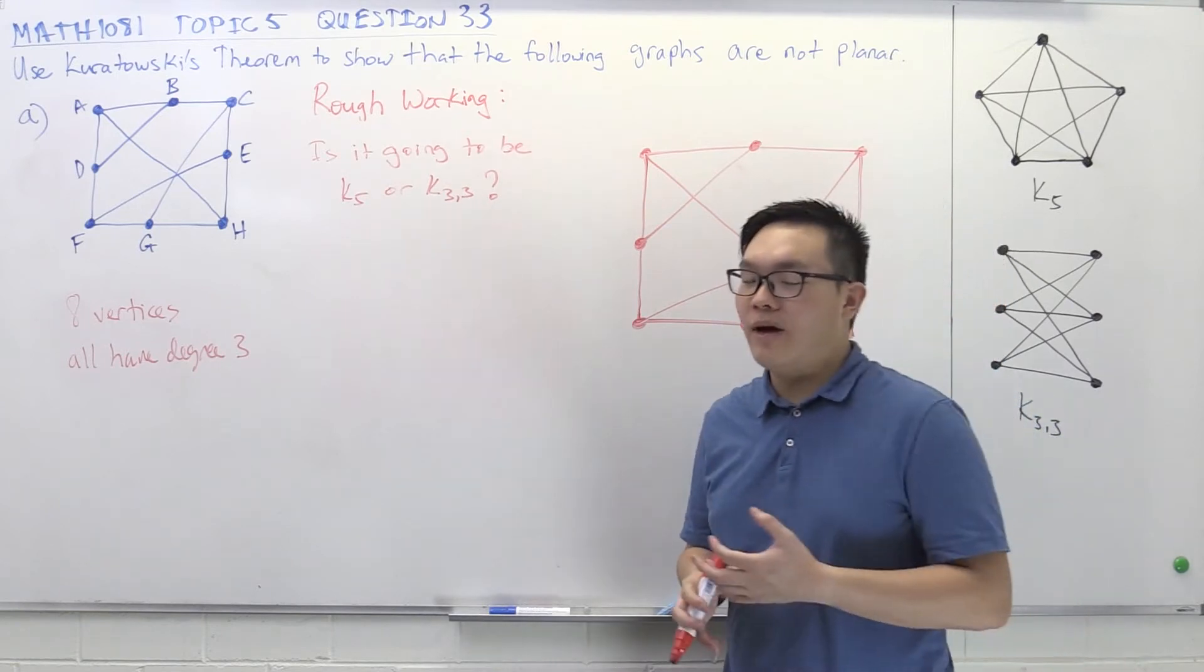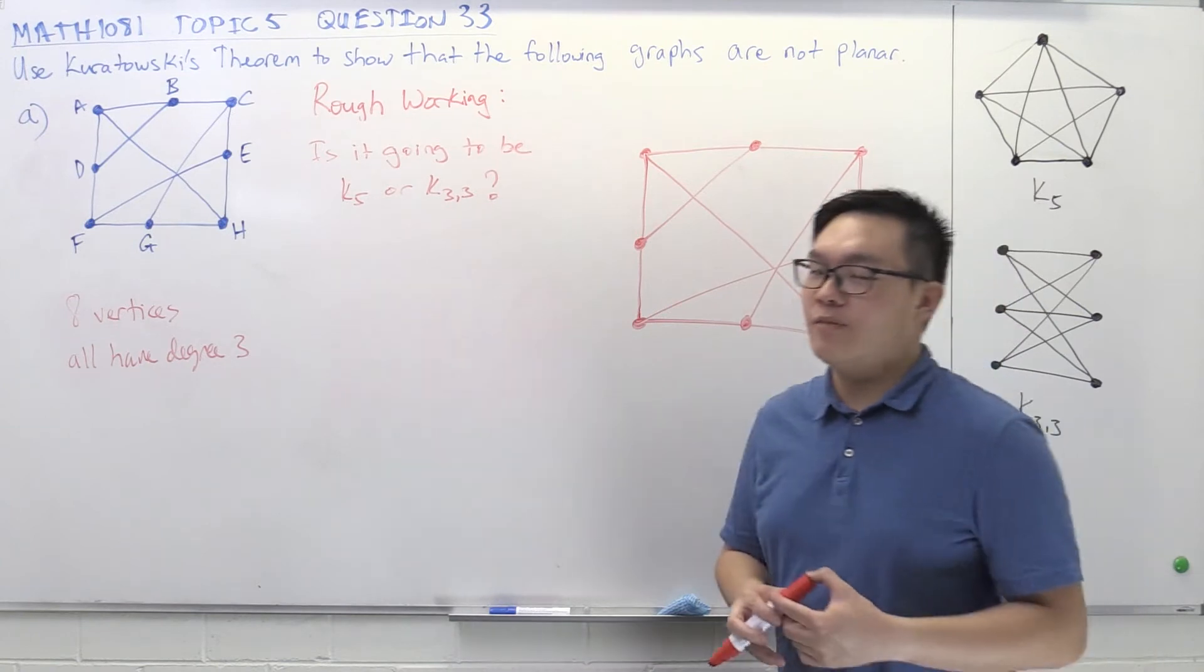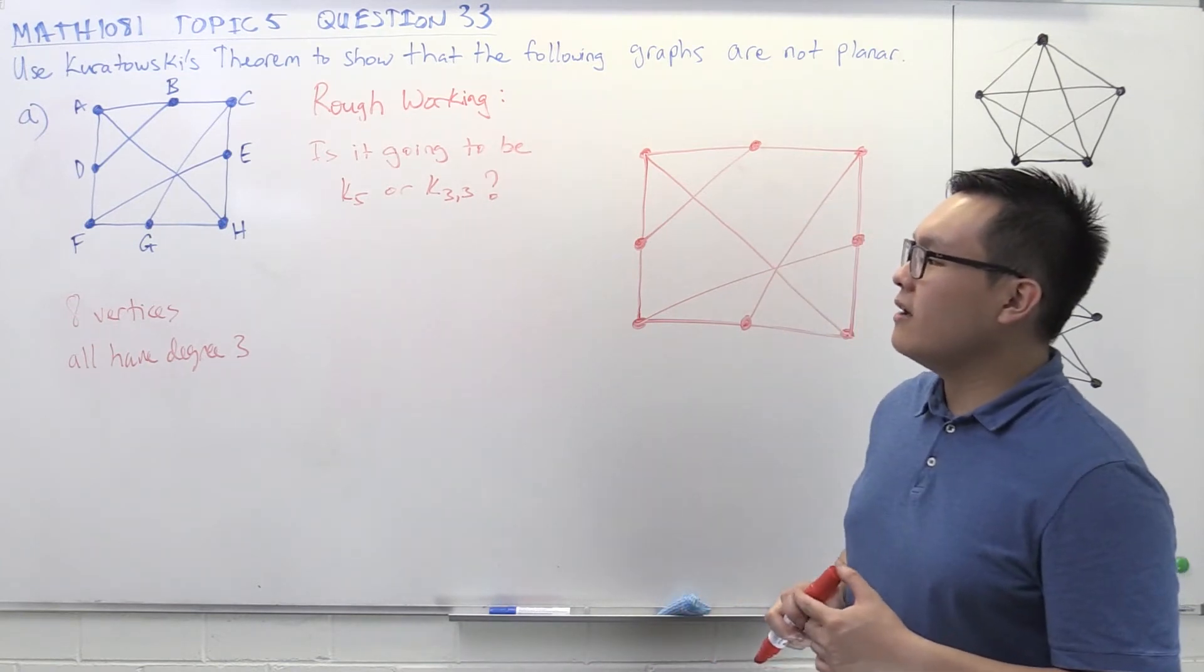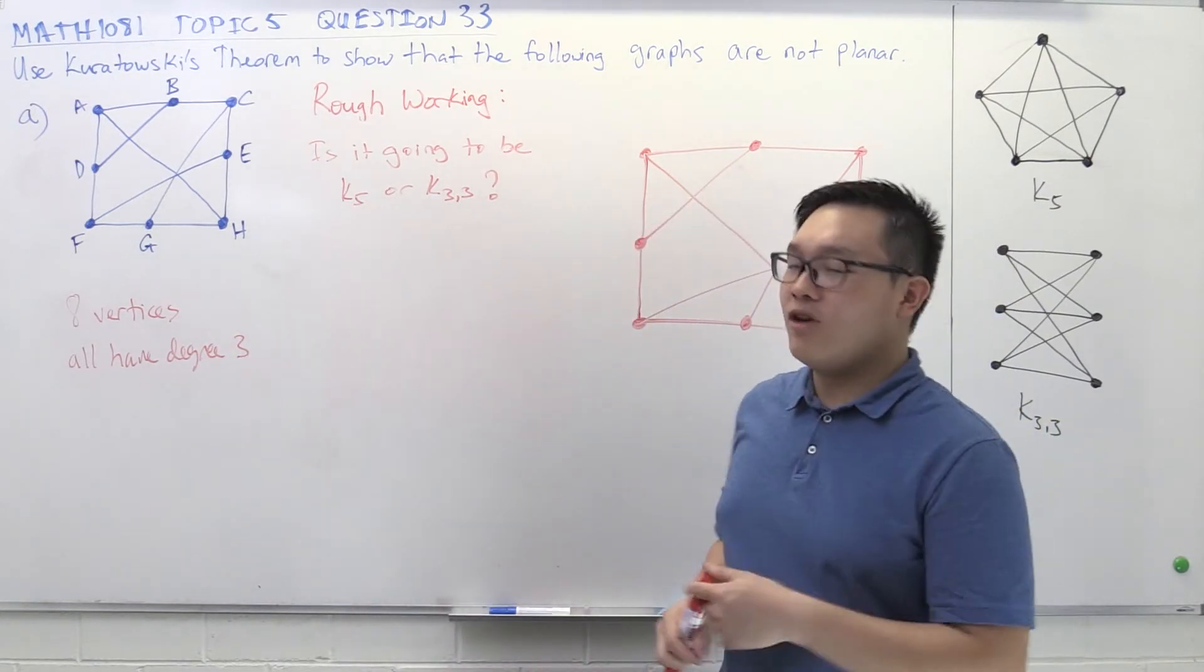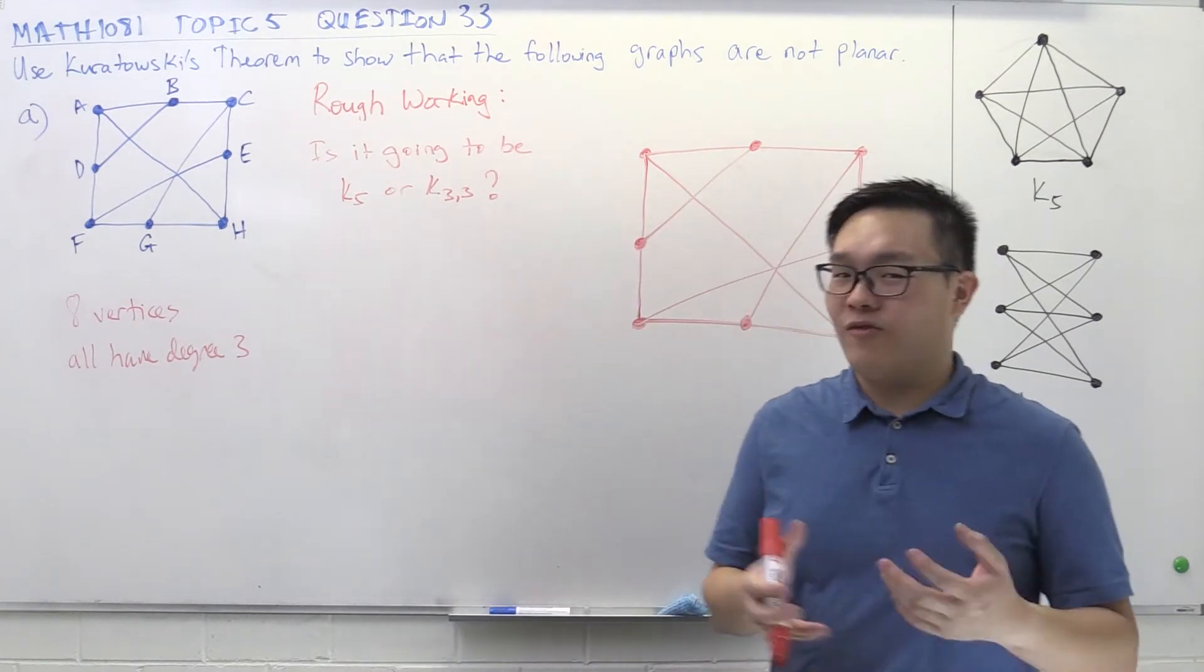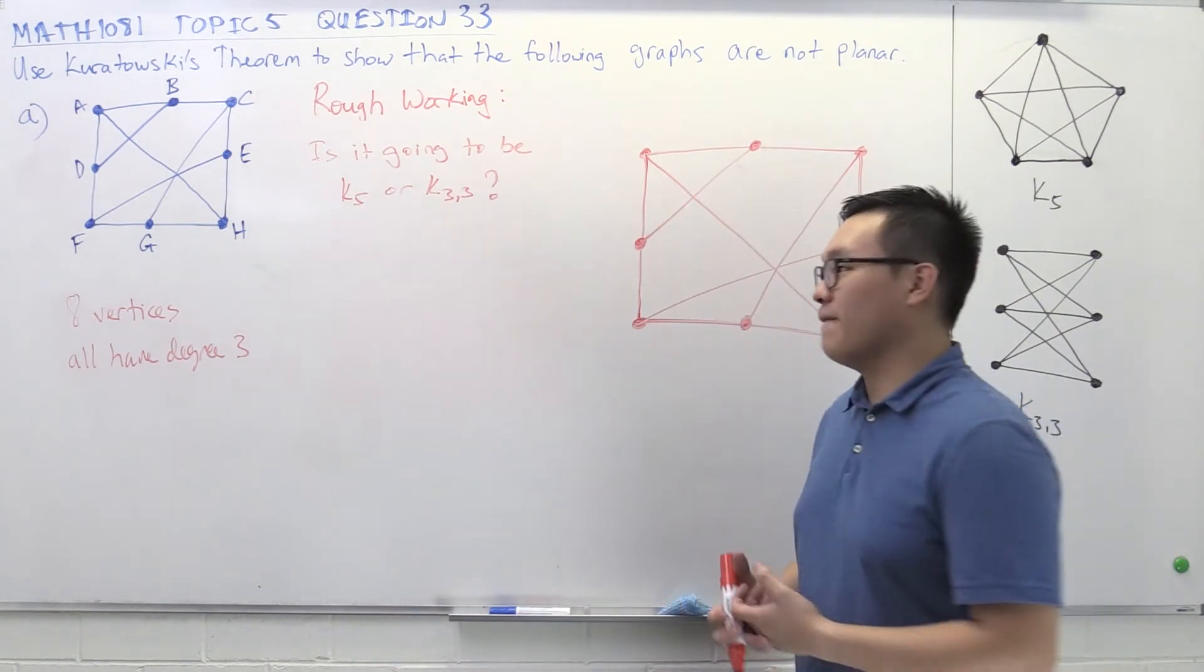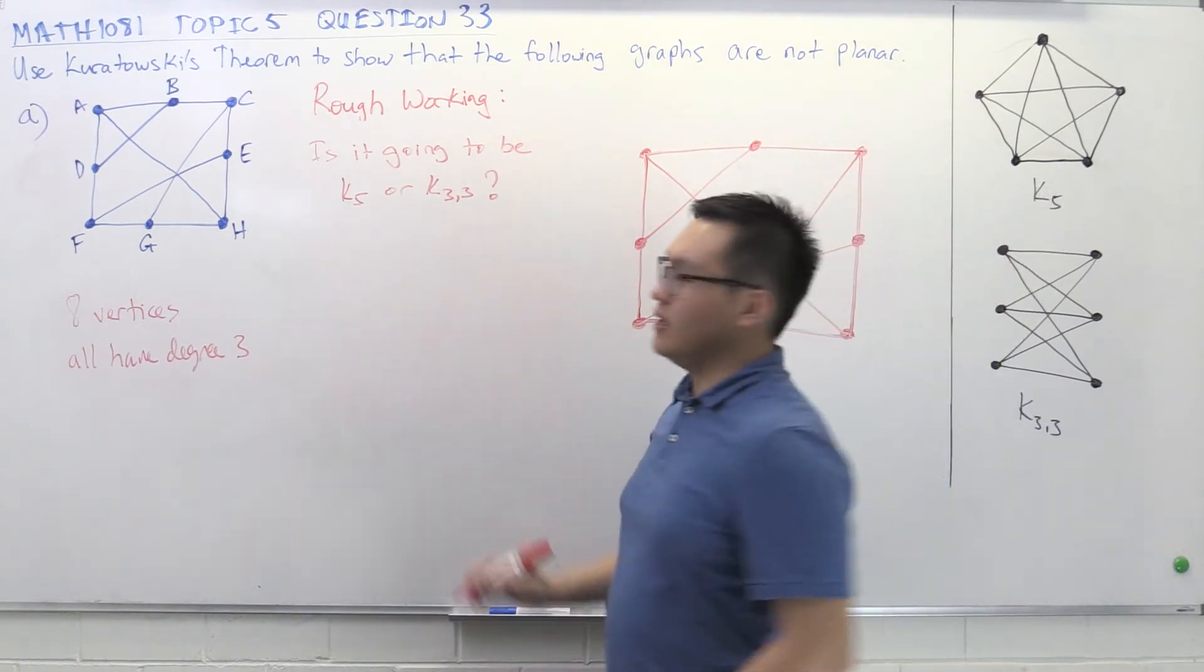So we need to get from that graph to either K5 or K33. And we can only get to them by removing things, right? We can remove edges and we can remove vertices, but we can't add anything back. So if the maximum degree of this graph is 3, then we couldn't possibly get to K5 because then we would need vertices of degree 4. And we can't possibly get from a vertex of degree 3 to a vertex of degree 4 without adding anything.